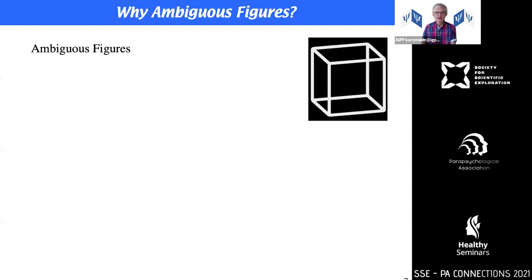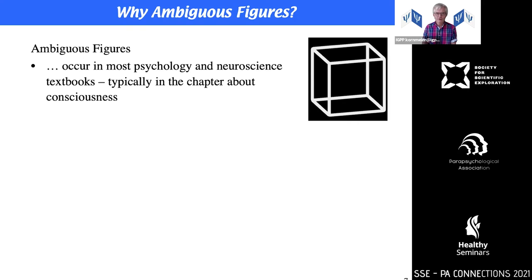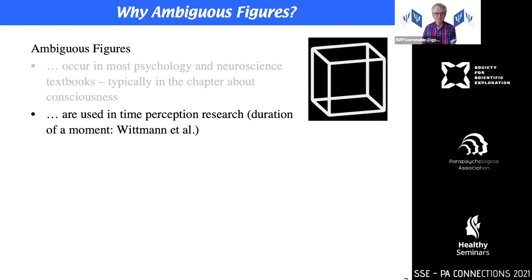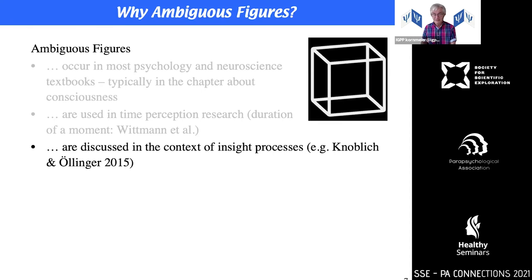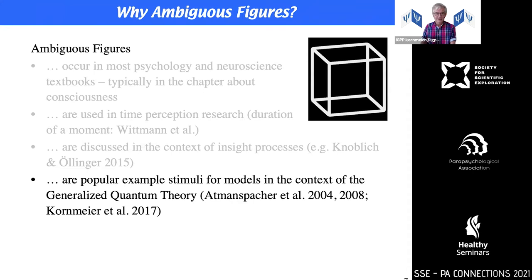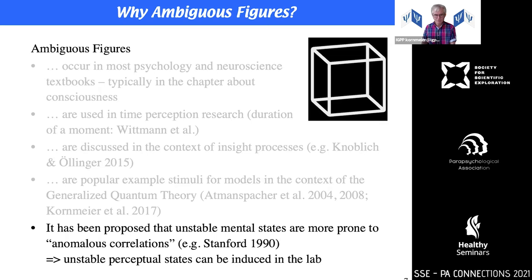Why should we use ambiguous figures to study precognition? Ambiguous figures appear in most psychology and neuroscience textbooks, typically in the chapter about consciousness. They are used in time perception research and discussed in the context of insight processes. They are popular example stimuli in models of generalized quantum theory by Harald Atmanspacher and colleagues, who proposed that unstable mental states are more prone to anomalous correlations. We use unstable perceptual states as a subclass of these, and they have the advantage of being easily induced in the lab.